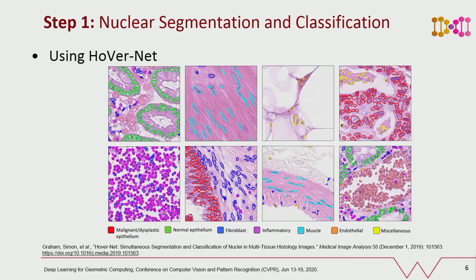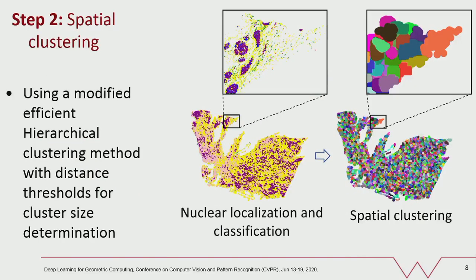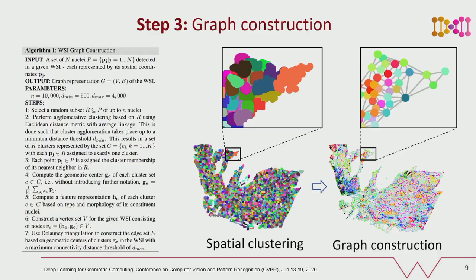For nuclear detection, segmentation and classification, we use our in-house deep learning based method called HoverNet that generates individual nuclear level predictions. We detect and classify nuclei using HoverNet in the whole slide image and then use a modified hierarchical clustering method with different distance constraints to perform spatial clustering of nuclei. Each cluster is considered as a node and is connected through Delaunay triangulation to its nearest clusters to model tissue level signaling mechanisms. We extract features for each cluster based on its nuclear composition.